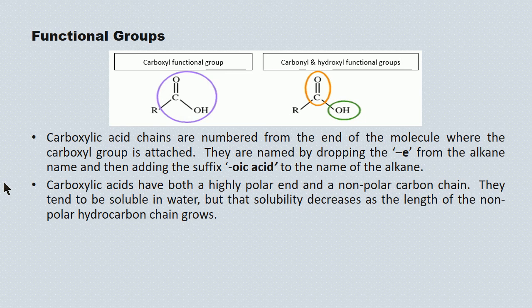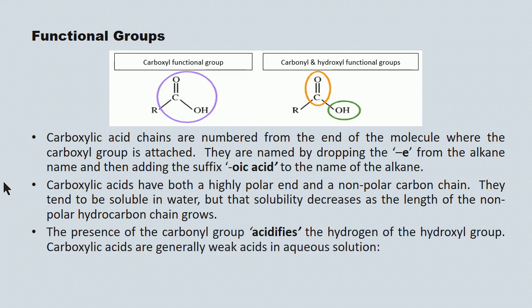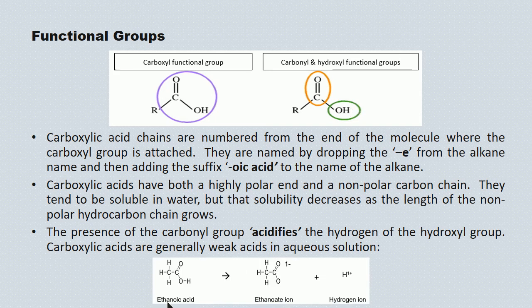These acids tend to be highly polar at the carboxylic end and nonpolar along the carbon chain. Shorter chain acids tend to be soluble in water, but as the hydrocarbon chain length increases, solubility in water decreases, while solubility in nonpolar solvents like gasoline increases. The presence of the carbonyl group acidifies the proton in the hydroxyl group — the acid loses that proton in water, acting as a proton donor. For example, ethanoic acid — formerly known as acetic acid, commercially known as vinegar — when placed in water, loses a proton to give the ethanoate ion.